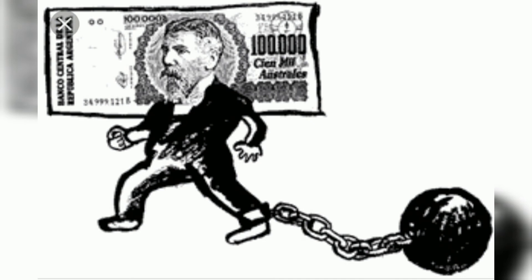To recap the first point: the fixed exchange rate system is a government-fixed rate system. The next point is pegging in the fixed exchange rate system. The basic purpose of this system is stability in foreign trade and capital movement. The second point is that the government has to maintain large reserves of foreign currency to maintain the exchange rate at the fixed level.